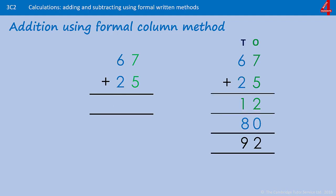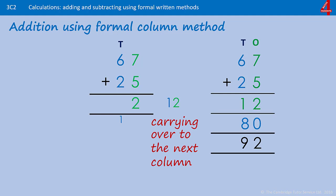This time we are going to do something a little bit different. Starting with the ones column: 7 add 5 is 12. We cannot put 12 in that column. What we have to do is take out the ones from the ones column, which is 2, and put that in the ones column beneath. That one lot of 10 in the 12 we carry into the tens column. In the tens column we now have 6 add 2, and we need to add the 1 that we have carried. 6 and 2 is 8, add 1 is 9. The answer is 92.